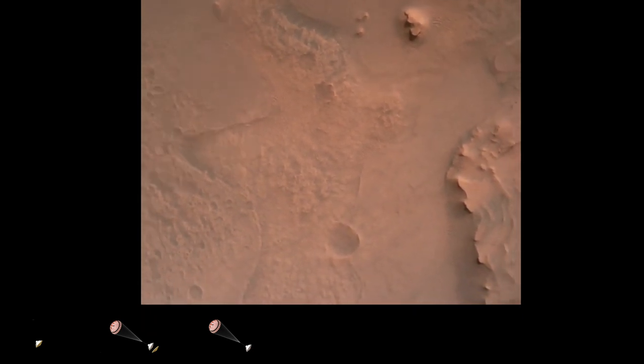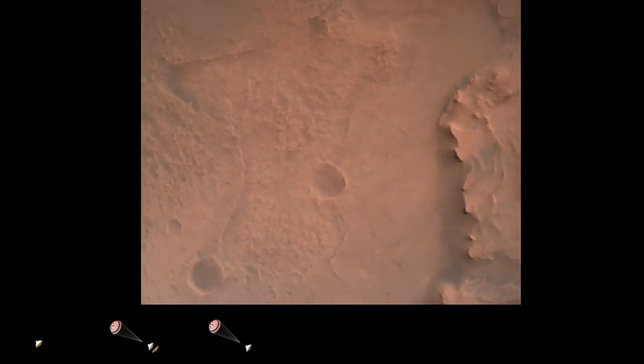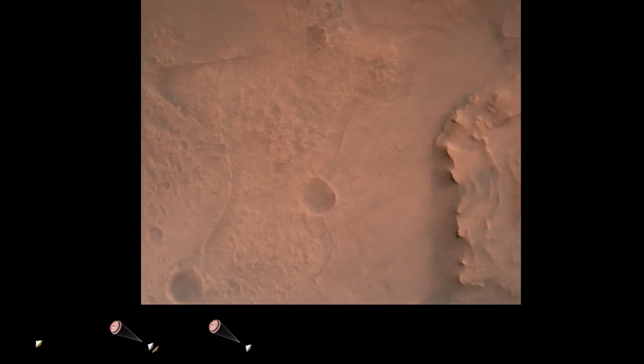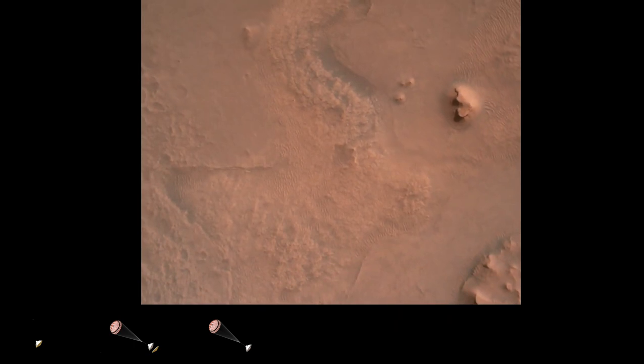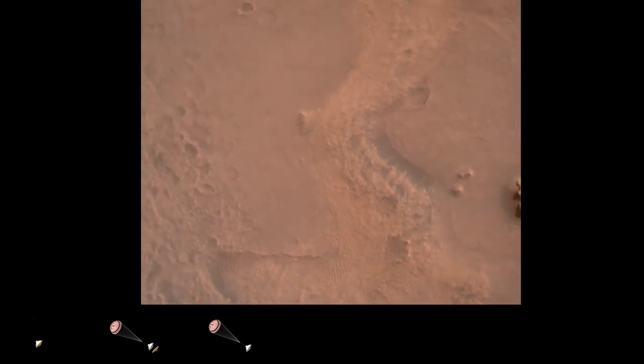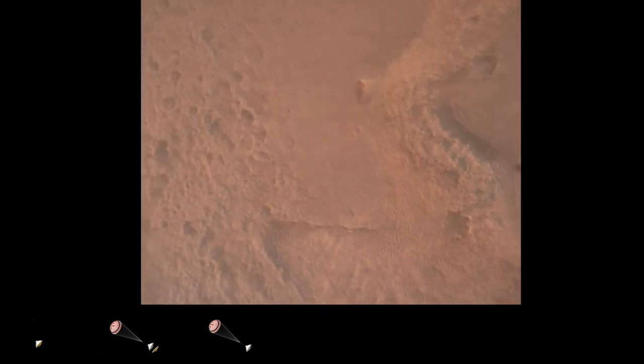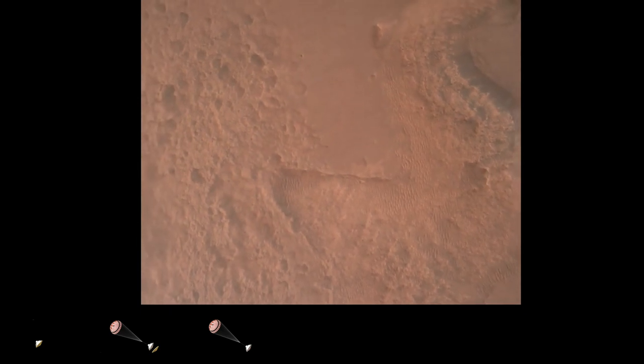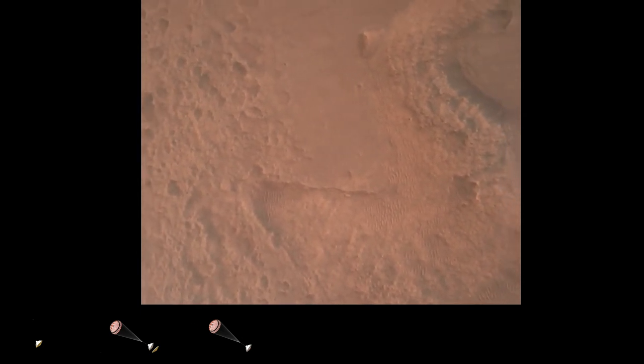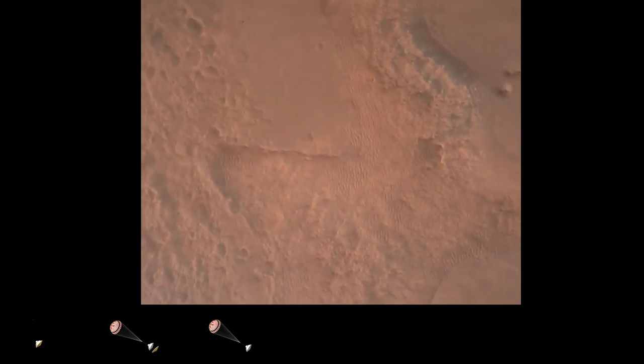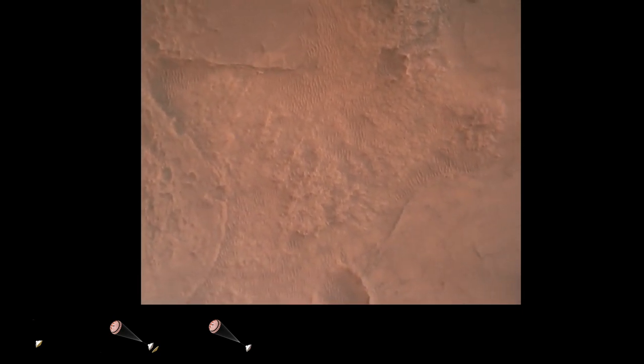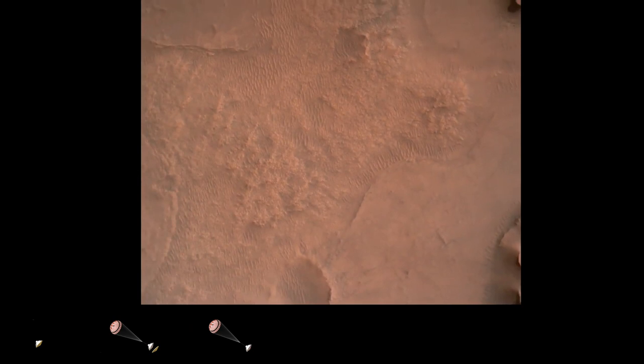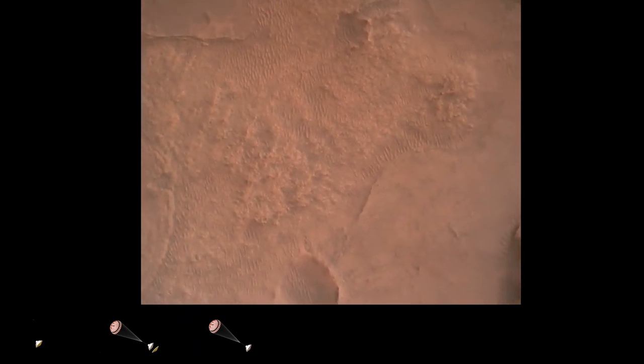Perseverance is continuing to descend on the parachute. We are coming upon the initialization of terrain relative navigation and subsequently the priming of the landing engines. Our current velocity is about 90 meters per second at an altitude of 4.2 kilometers. LVS valid. We have confirmation that the lander vision system has produced a valid solution as part of terrain relative navigation.